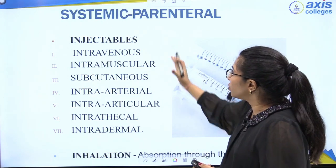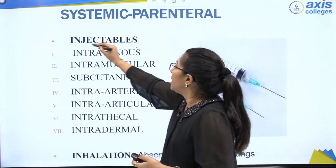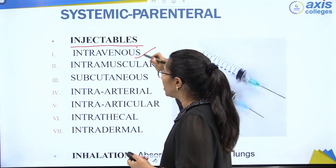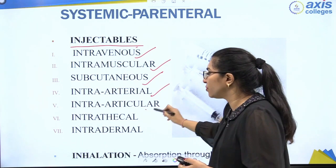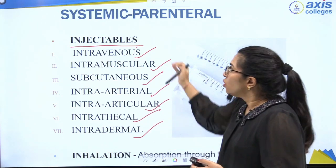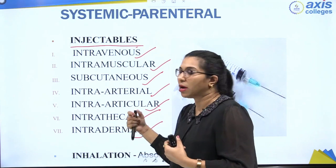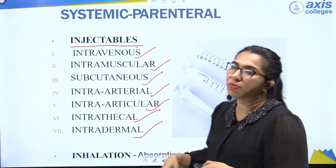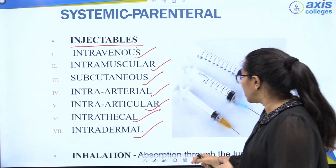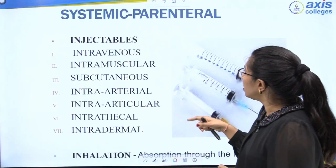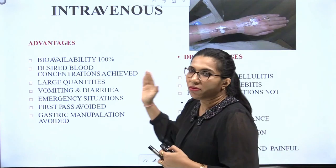The parenteral route is divided into various injectable types depending on where in the body the injection is administered: intravenous (into the vein), intramuscular (into the muscle), subcutaneous (under the skin), intra-arterial (into the artery), intraarticular (into joint cavities), intrathecal, and intradermal. Inhalation — taking medicine directly into the lungs — is also a parenteral route.